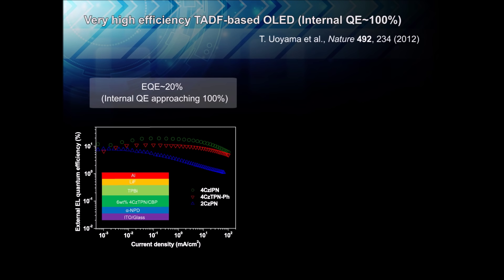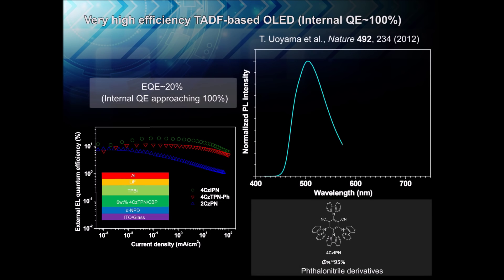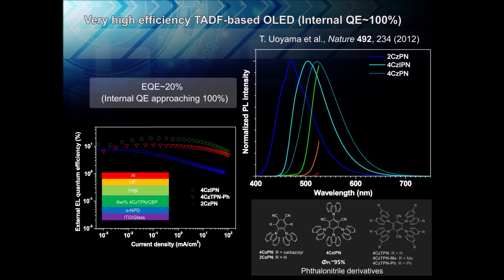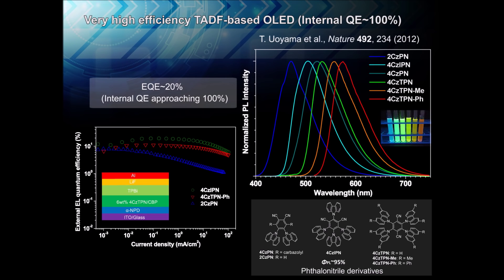Using such a design strategy, OPERA realized the first TADF material to achieve an internal quantum efficiency of close to 100% in an OLED, the green emitter named 4CZ-IPN. By slightly modifying the chemical structure of 4CZ-IPN, emission ranging from sky blue to orange could be achieved. The report of these materials in the journal Nature in 2012 marked the arrival of the third generation of OLED emitters and jump-started interest in TADF.